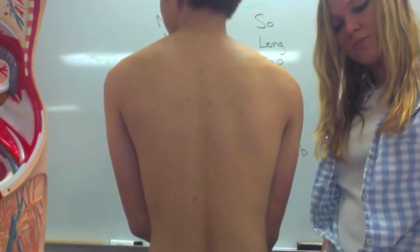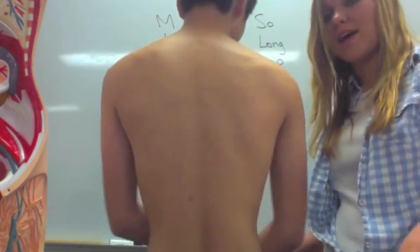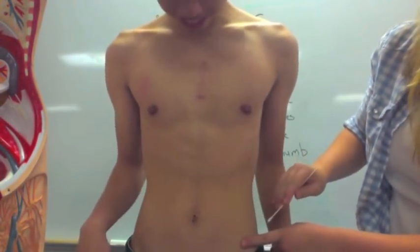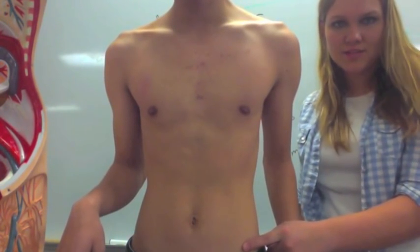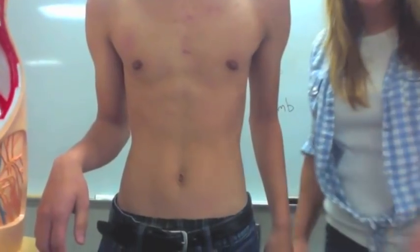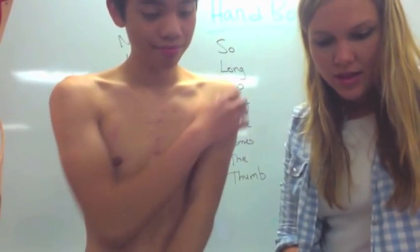His anterior superior iliac spine, or ASIS, is going to be right here — that's a landmark that nurses will use to give injections, like intramuscular injections. His costal margin is going to be right here — the bottom of the ribs. The linea alba is going to be this line that goes all the way down his abdomen.